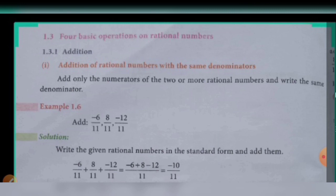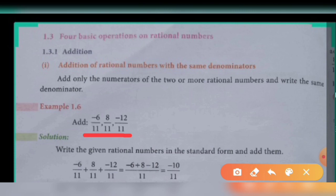Example 1.6: Add minus 6 by 11 plus 8 by 11 plus minus 12 by 11. For addition we put the addition symbol. If it is the same denominator, write the denominator only once and add or subtract the numerators.